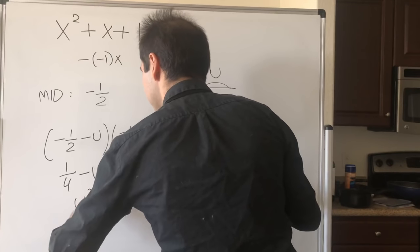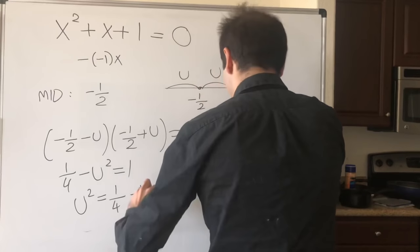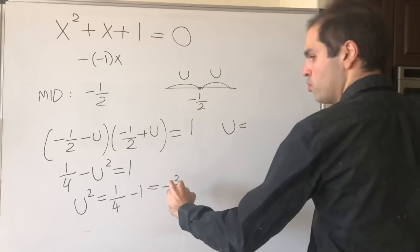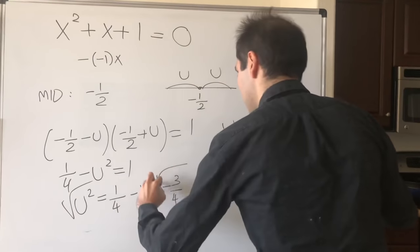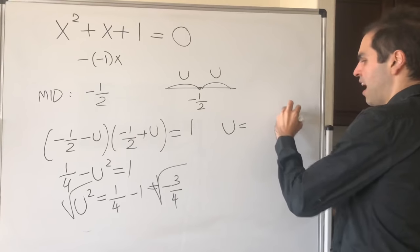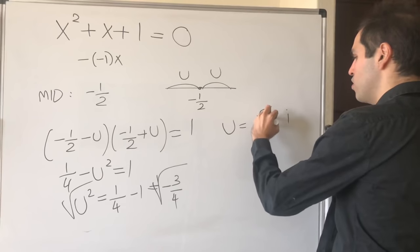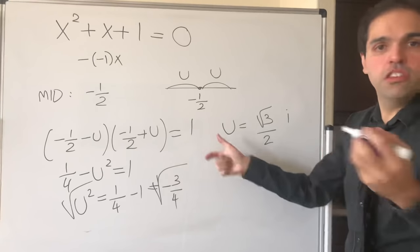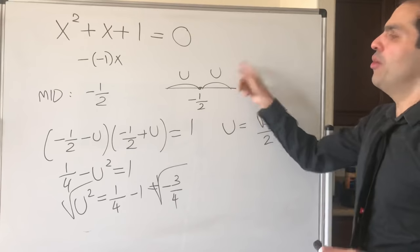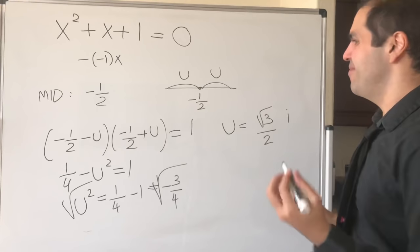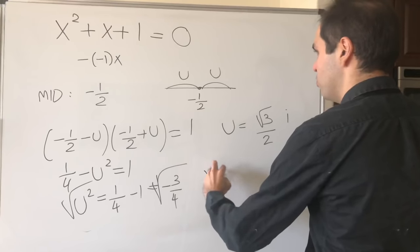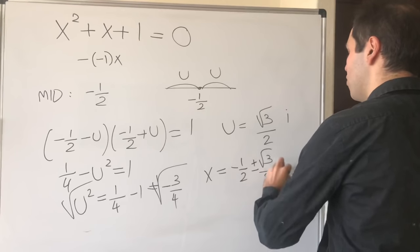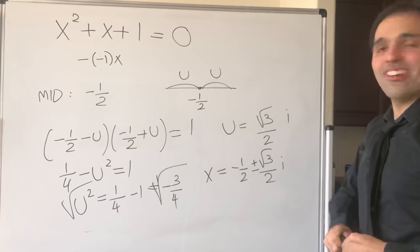And then you can solve this. So this becomes 1/4 - u² = 1. Swap it, u² = 1/4 - 1, and that becomes -3/4. Therefore u becomes the square root of that. But square root of -1, that's i, and square root of 3/4 is √3/2. It doesn't matter if you put plus or minus because in the end the roots will have plus or minus. And I know this doesn't represent the distance, but still the method is correct. What does that tell us about the roots? It just becomes -1/2 ± (√3/2)i.